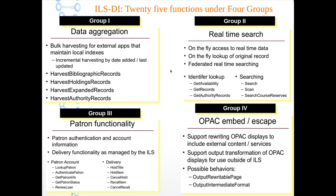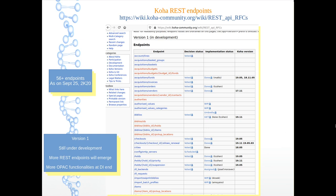The result was the development of the ILSDI standard — first version came in June 2008 and the latest, version 1.1, is available from December 2008. ILSDI advocates 25 functions for data aggregation, real-time search, pattern functionalities, and OPAC embedding, organized in four groups. With the emergence of REST-based APIs, the Koha community started exploring REST endpoints from version 17.11, and there are presently 56 plus endpoints. It is version 1, still under development, but more REST endpoints will emerge in future, ensuring more OPAC functionalities at the discovery interface end.